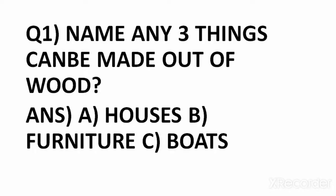Which are the three things that can be made out of wood? Houses, furniture, and boats. There are stilt homes which are made up of wood. There is furniture in our home, all made up of wood. Boats are also made up of wood because it is the only substance that floats on water. Any other substance will sink. So wood is used while making boats.